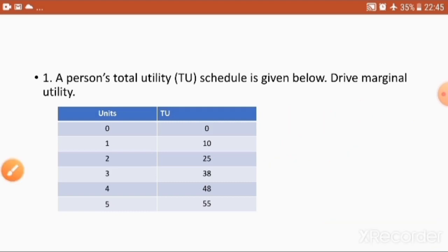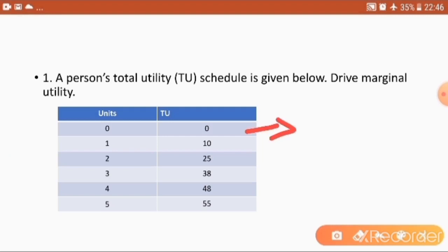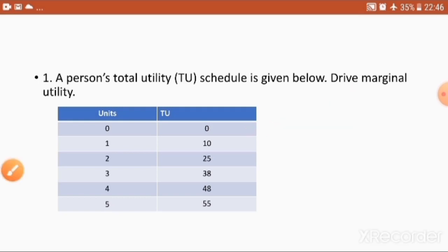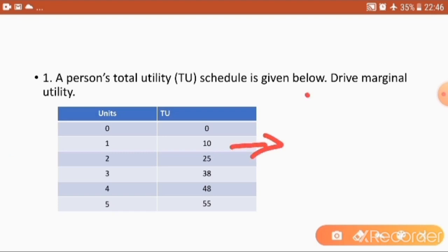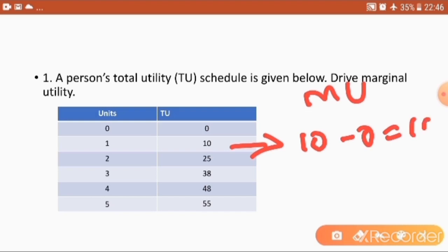So what will be the first marginal utility? When the first unit is 0, the marginal utility will also be 0. The second total utility value is given as 10. So how we find the marginal utility for the second unit: that is 10 minus 0, which equals 10.